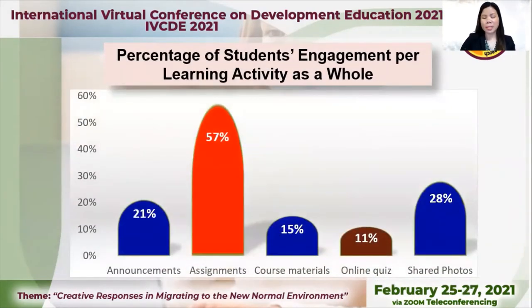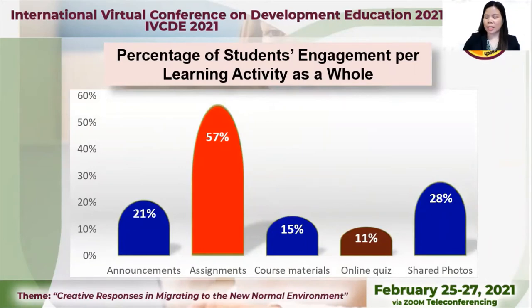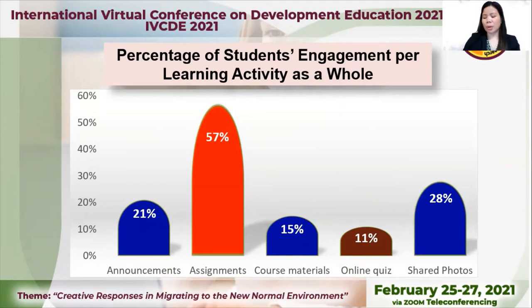Looking at the percentage of students' engagement for learning activity as a whole, the assignment ranked first, followed by shared photos which ranked second, announcement ranked third, learning materials ranked fourth, and the online quiz was last. This means that the students were most engaged with the assignments and least engaged with the online quiz. Students need more motivation in working with their learning activities and performing their tasks utilizing this platform.